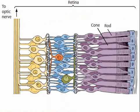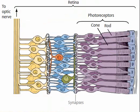Rods and cones are also called photoreceptors. The rod cell, named for its shape, is a modified neuron that does not produce action potentials, but it does release neurotransmitter from its base where it forms synapses with the next neurons in the visual pathway.